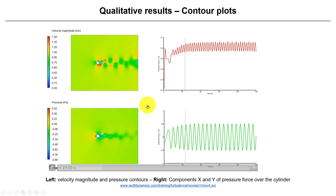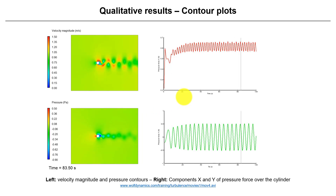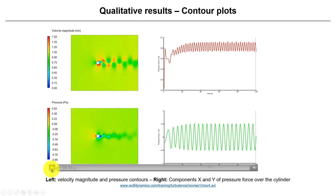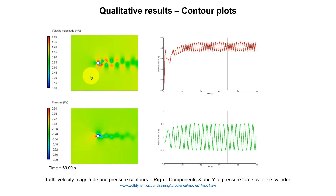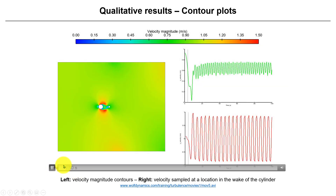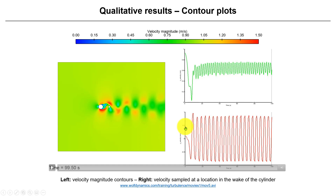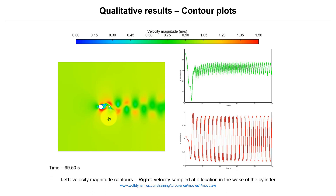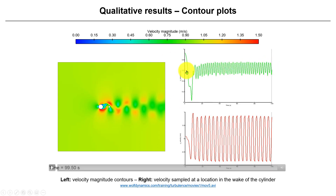When running unsteady, you should also compute mean quantities and focus on those mean values. You can put sampling points in the wake — usually where you have fluctuations — and sample the X and Y velocity components. You can start to see correlations in these components. The Y velocity being positive or negative tells you a vortex is passing, and you see oscillations around a mean value — that will relate to the standard deviation or variance.